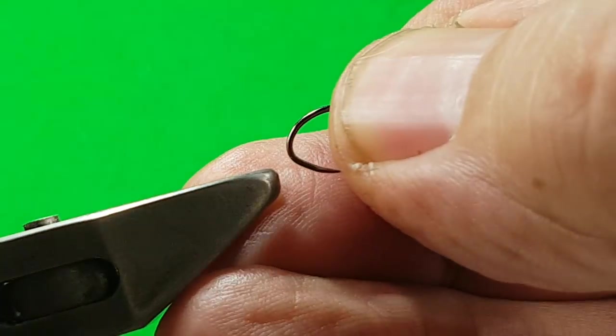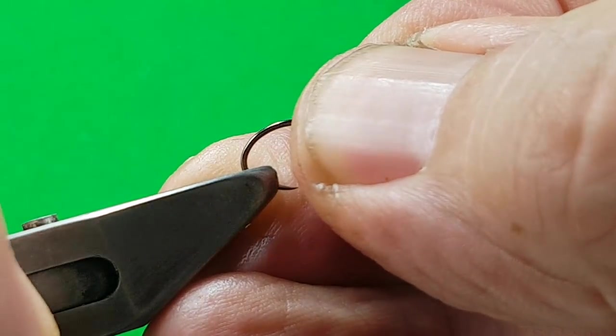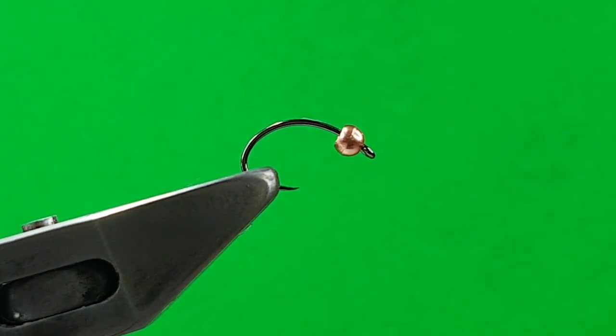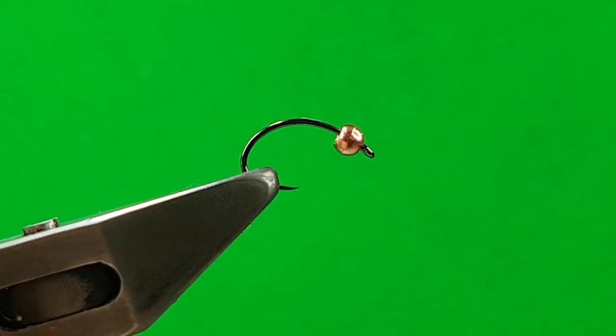This is a size 14. Hook in the vise is a FASNA 120 clink hook. Nice shape. Good wire on it. Nice strong hook.